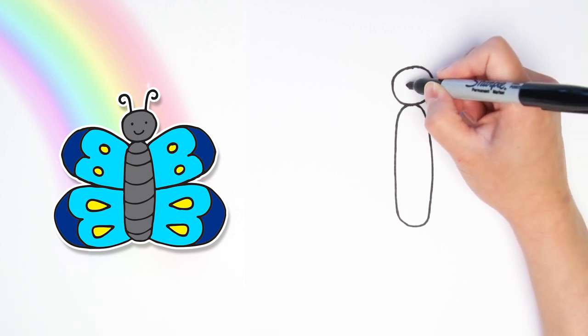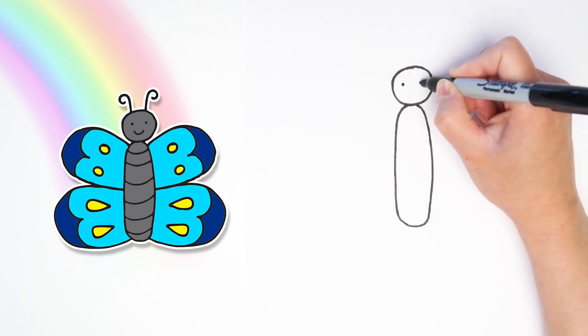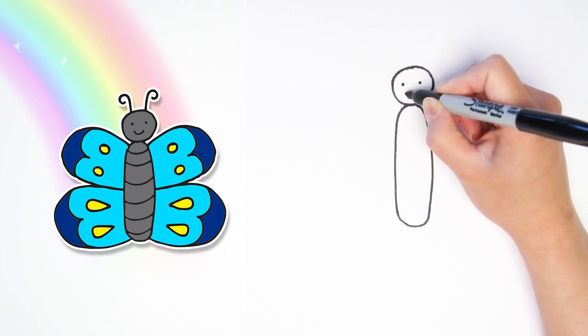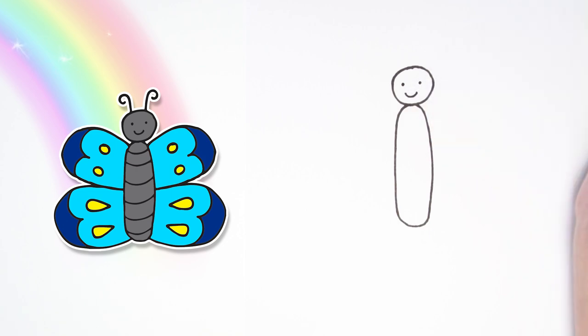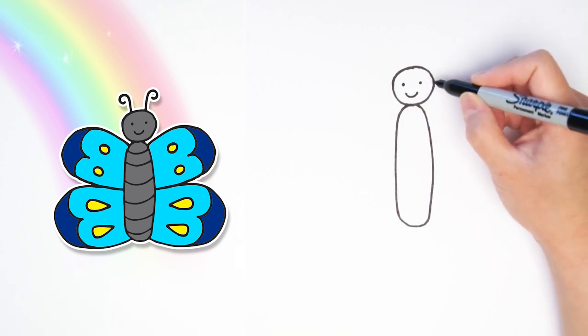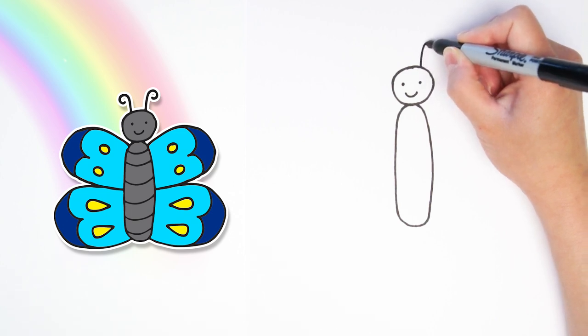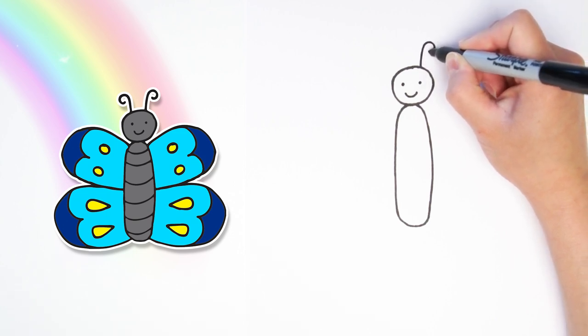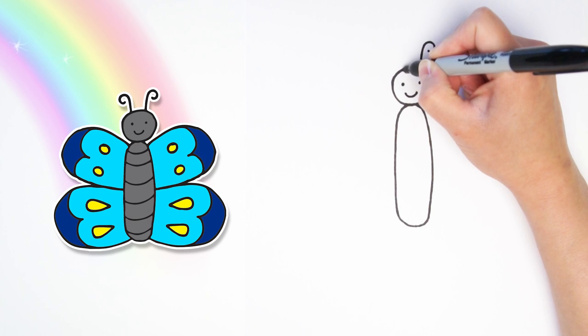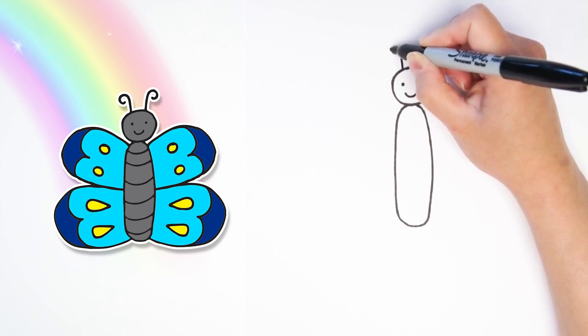Let's add a face. A cute little face. Two eyes and a smile. Alright, now we're going to add a curly antenna on top, on this side and another one over here.